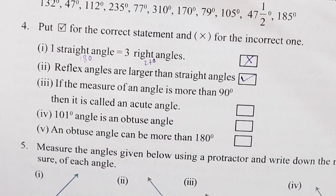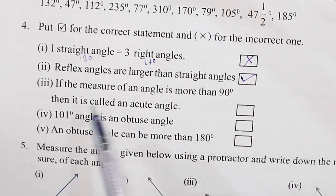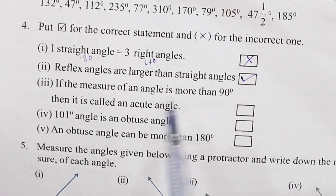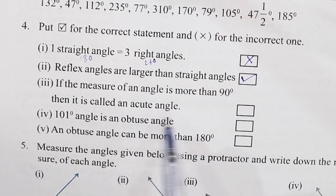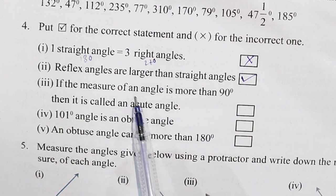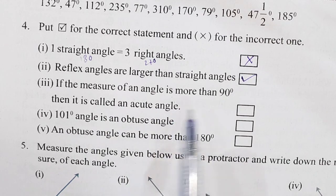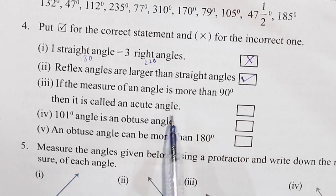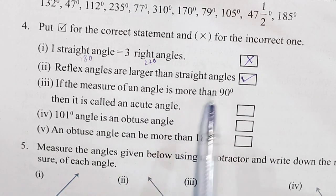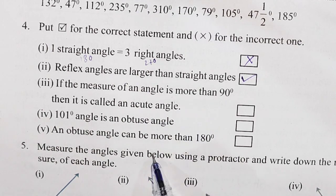Next: if the measure of an angle is more than 90 degrees, then it is called an acute angle. But if the measure of an angle is more than 90 degrees, it is actually called an obtuse angle, not an acute angle — so this statement is wrong.